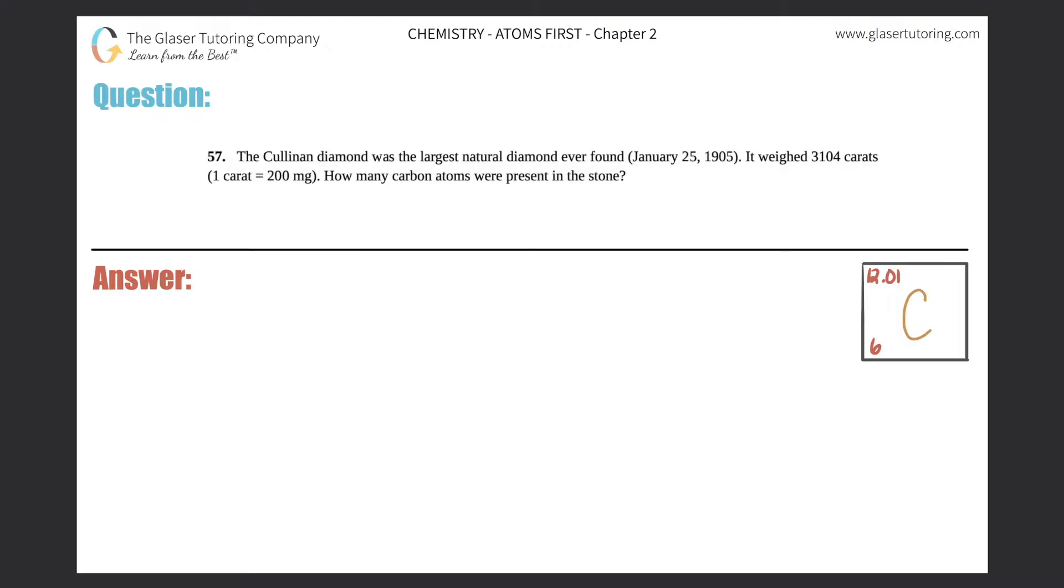Number 57: The Cullinan diamond was the largest natural diamond ever found on January 25th, 1905. It weighed 3104 carats, and one carat equals 200 milligrams. How many carbon atoms were present in the stone?